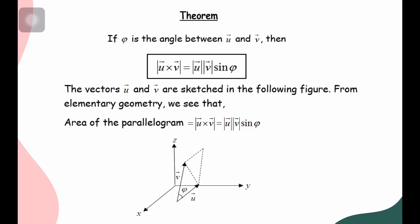We have seen about the cross product and a few theorems or properties on it. Now we want to see one theorem that says if phi is the angle between vectors u and v, then the magnitude of the cross product u×v equals the magnitude of u multiplied by the magnitude of v multiplied by sine phi.